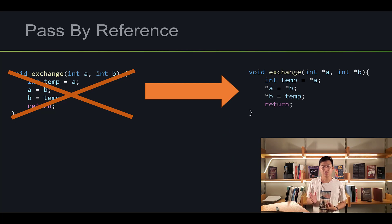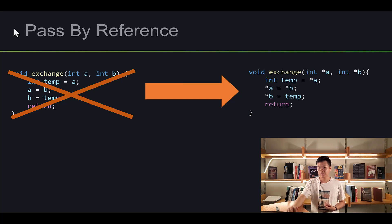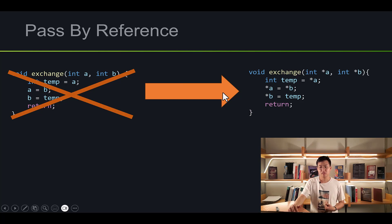On the right is the new code for exchange. I made some very small changes — instead of taking in int, we're taking int pointers for both of them. And I will explain all these symbols as we move on.